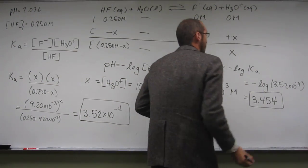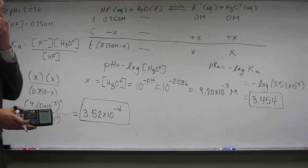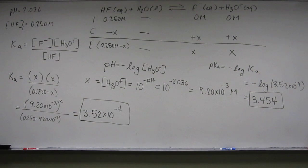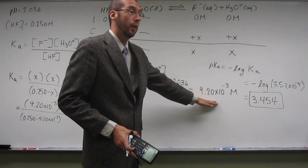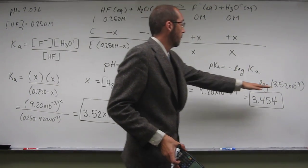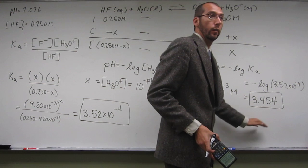And I get 3.454 when I do that. So remember your significant figure rules when you're going to and from logs, right? So we went from 4, so we went down to 3. And so we went from 3 here up to 4.